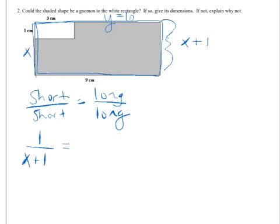And then the long side of my little white rectangle is 3, and the long side of my large outer rectangle is 9.